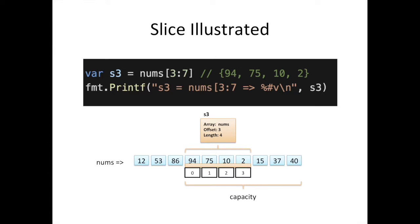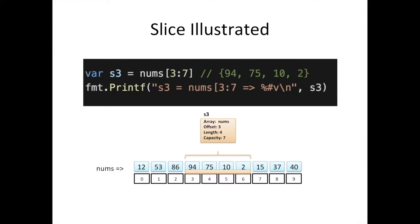But there's still this idea of capacity. When we ran the capacity function on slice 3, it said 7 — that's where the 7 came from. The capacity is from the beginning of that slice to the end of the underlying array. So the capacity of slice 3 is 7. To complete the picture of what a slice looks like internally: it's a pointer or reference to the underlying array, the offset where it starts, the length of that slice, and the capacity — which is from where it starts to the end of the underlying array.